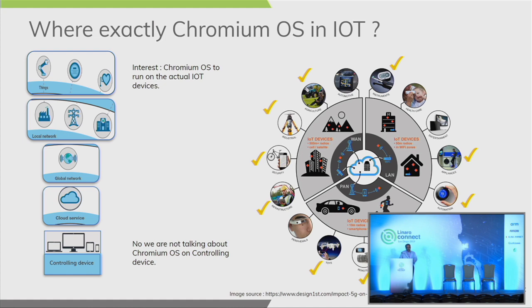All these three areas should be covered in the stack. When we say Chromium OS in an IoT device, where are we actually trying to push it? Are we going to push it into the end device or are we looking at Chromium OS as a controlling device? We are definitely not looking at Chromium OS as a controlling device like a notebook or tablet, because it is already there and we can write applications to make our phones or tablets or notebooks as a controlling device. What we want to do is get Chromium OS onto the actual IoT device which is collecting and processing the data.